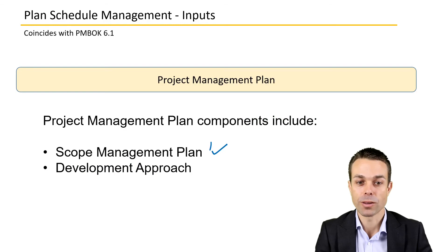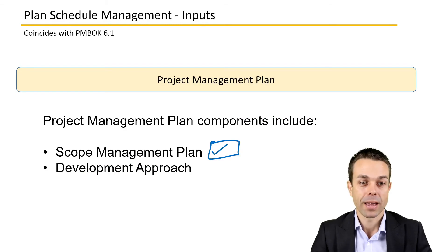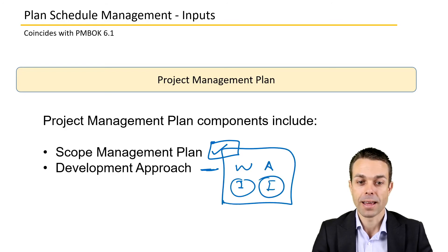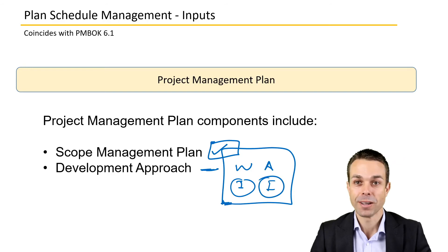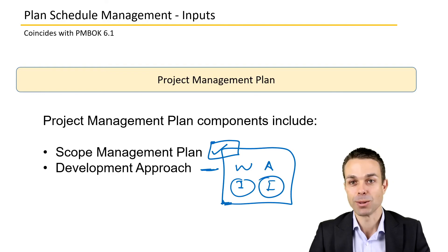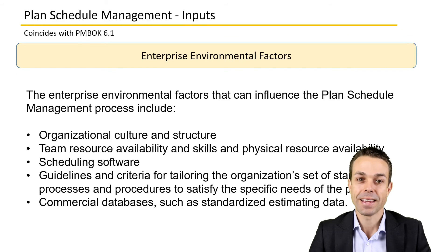The project management plan will also be an input — specifically the scope management plan with all of the scope we've gathered and the process used to gather it. The development approach matters too: is it waterfall, agile, incremental, or iterative? The details around the development approach affect how we define our schedule — is it done over time in iterations, or all in one big bang at the beginning?